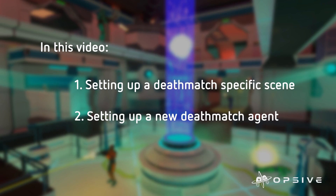In this video I'm going to cover two different things: setting up a deathmatch-specific scene, and setting up a new deathmatch agent. The Deathmatch AI Kit has a demo scene with a complete deathmatch setup including a scoreboard, different teams, and all that — but most people in their own projects won't want a deathmatch-specific scene. They'll instead want to use this advanced behavior tree for their own enemy AI.